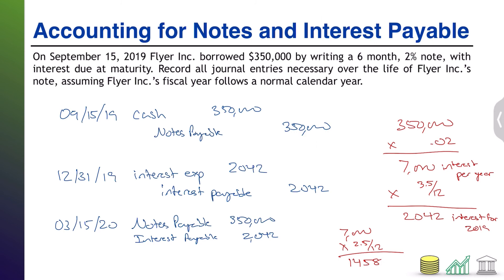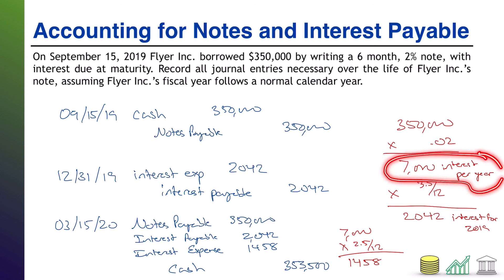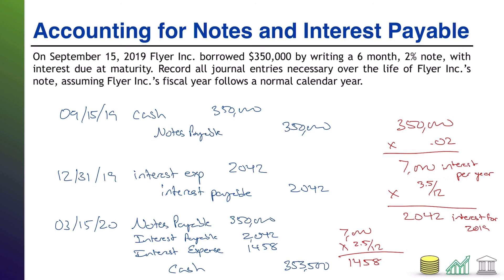And that is the interest expense for 2020: $1,458. And finally, all of these things are getting paid out in one lump sum cash payment. So we're going to have a grand total of $350,000 for the principal, plus another $3,500 for the interest, so $353,500 is the total cash payout. A lot of times students will ask: but you only added up $3,500 in interest, but this note is supposed to earn $7,000 in interest. But remember, that is $7,000 in interest per year. The note only had a lifespan of six months — half a year — which means you're only going to get half a year's worth of interest by the time the note is due. So there are three journal entries for notes and their related interest payable.